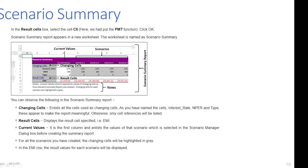Next, 'Result Cells' shows the result cells specified — that's EMI. 'Current Values' is the first column and lists the values of the scenario selected in the Scenario Manager dialog box before creating the summary report. For all scenarios created, the changing cells are highlighted in gray. In the EMI row, the result values for each scenario are displayed.